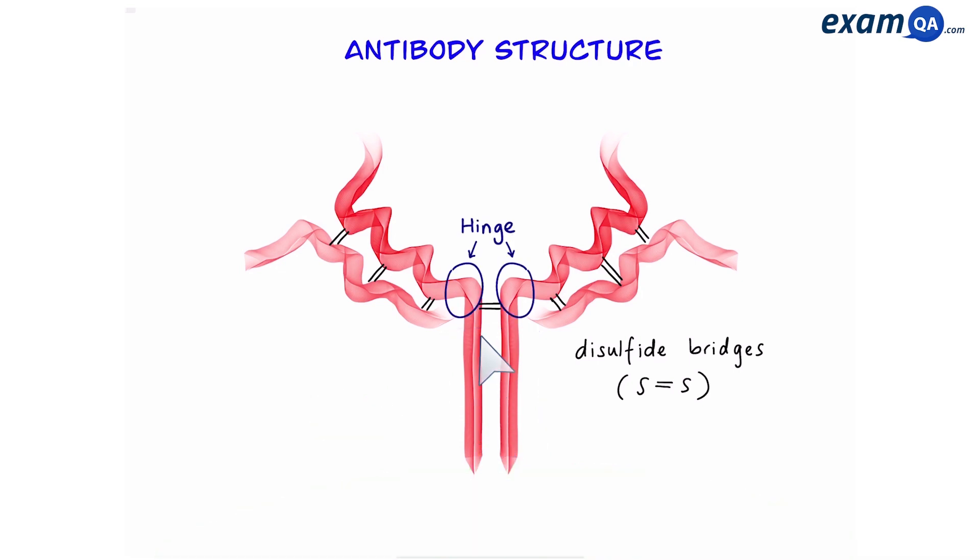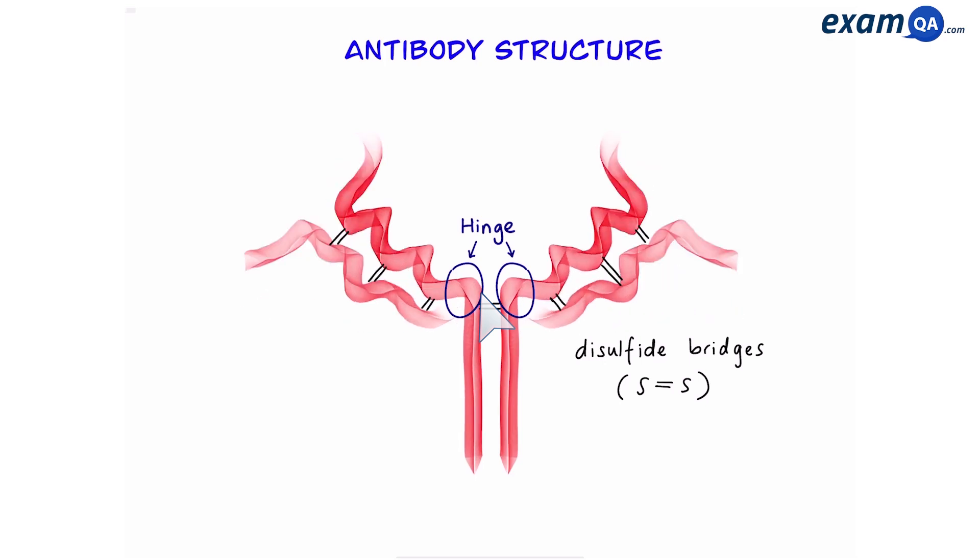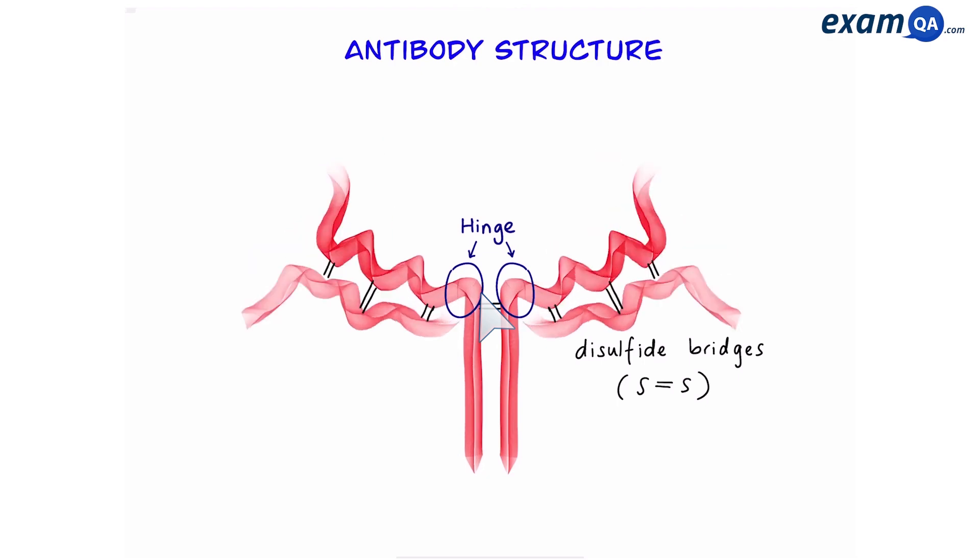Next, this area is known as the hinge region. The hinge region is very important as it gives the antibody flexibility, and we'll see why this is important later.